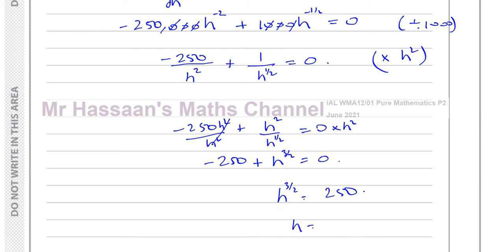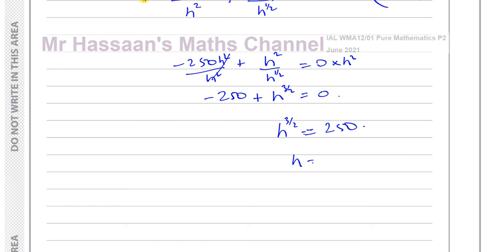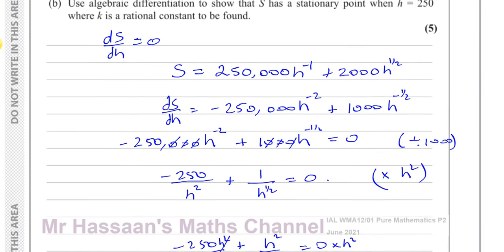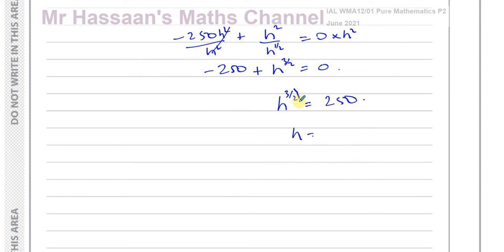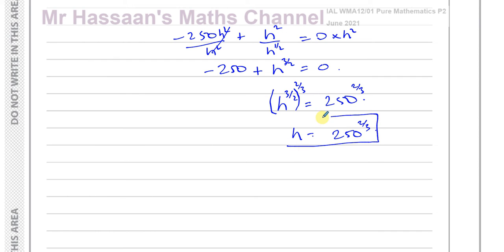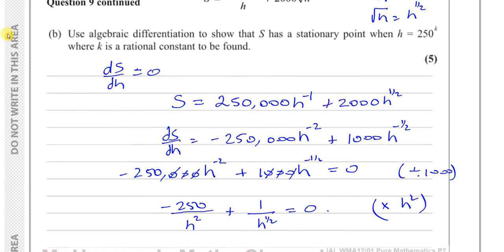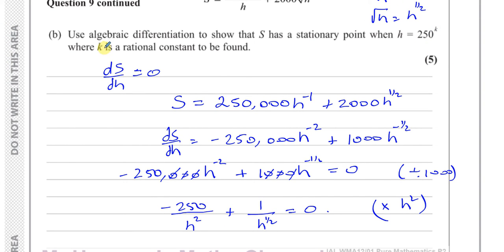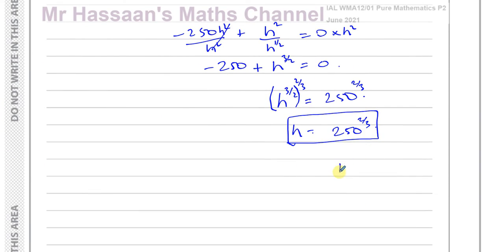H is raised to the power of 3/2, so to isolate H I raise both sides to the power of 2/3 — the reciprocal — since 3/2 times 2/3 equals 1. Therefore H equals 250 to the power of 2/3. This gives k equals 2/3, which is the rational constant they asked us to find. That's the answer to part B.